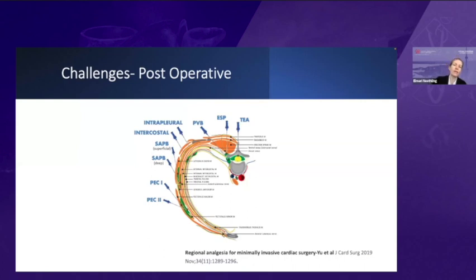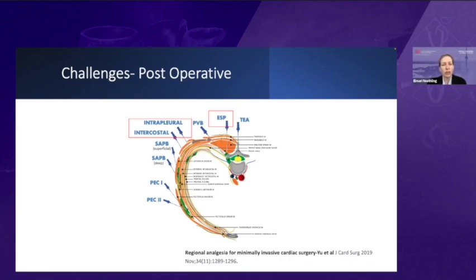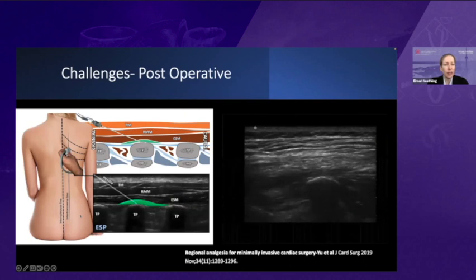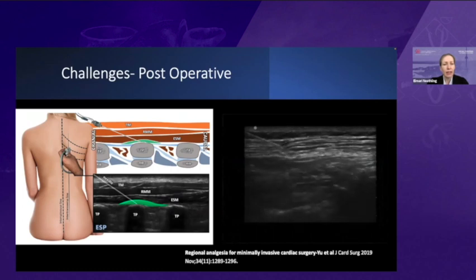Post-operative pain is the next big challenge for all minimally invasive cases. Regional techniques are very useful, and the technique chosen depends on the type of surgery. At our center, our surgeon routinely places an intercostal catheter that we thread towards the paravertebral space. We've also done erector spinae plane (ESP) blocks, which work quite well, but you have to place a catheter — the first six hours are manageable, but after that pain is quite severe for the first three days. We've also used serratus anterior blocks as rescue techniques. We normally try to perform the ESP block prior to surgery when it's easier to access the patient.